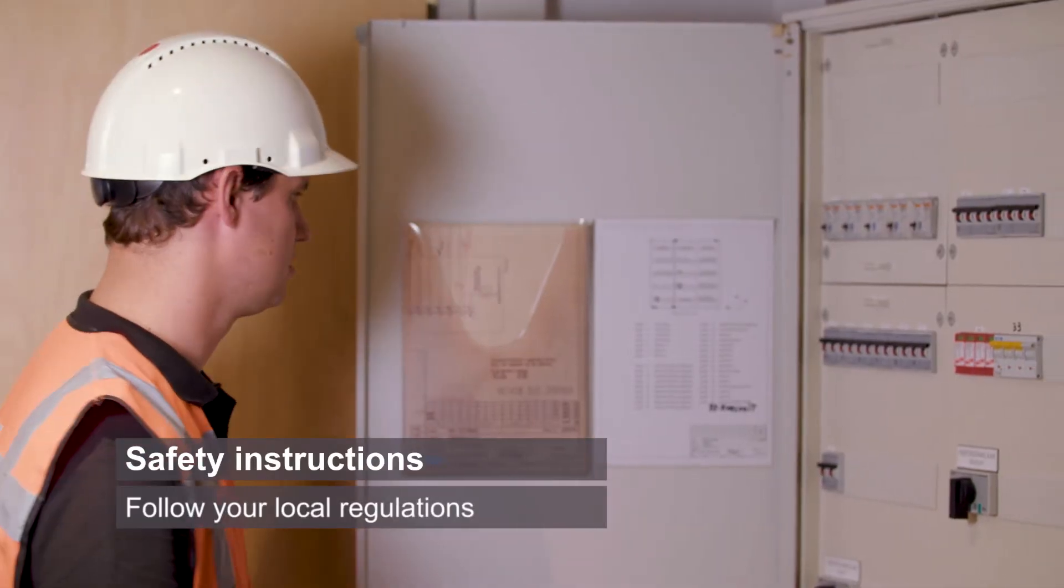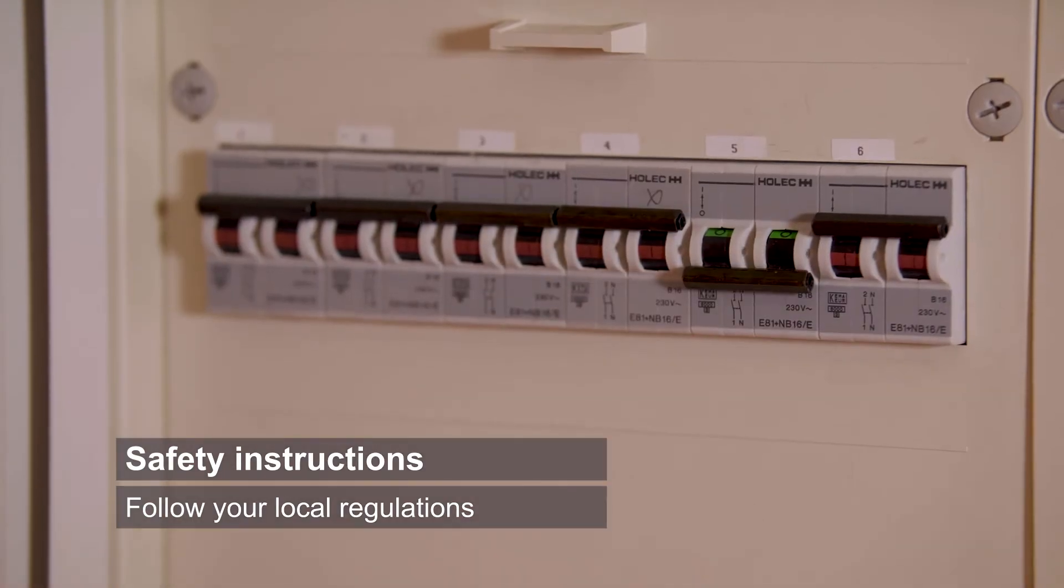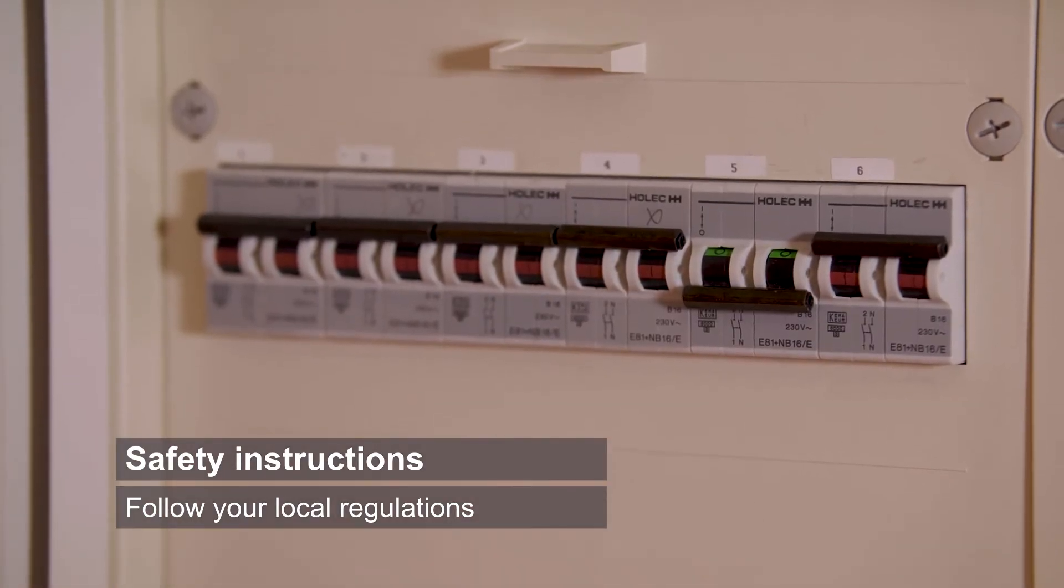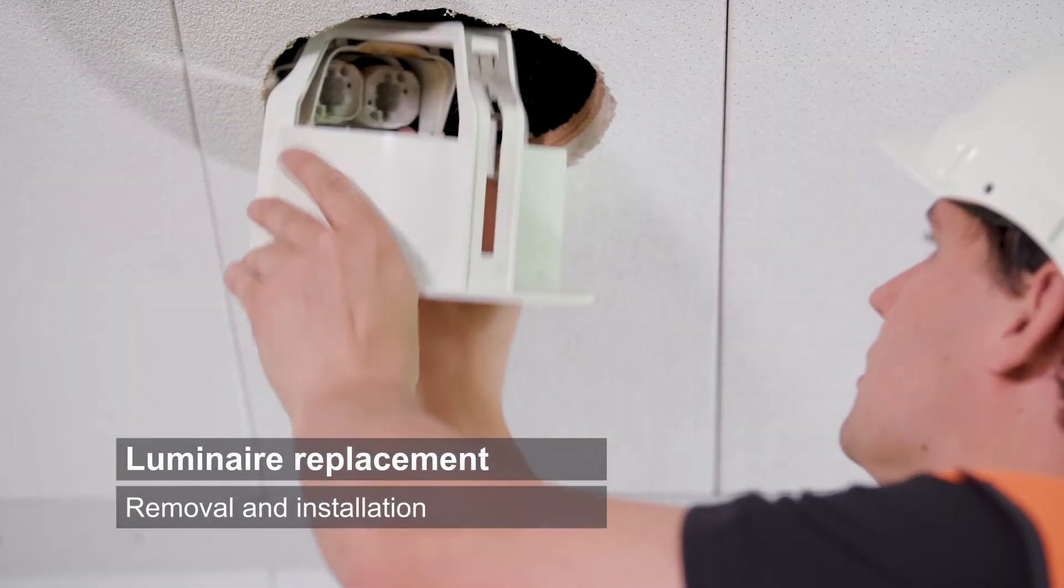Take care of your safety and follow your local regulations. Switch off the power in the main cabinet. Remove the existing downlight from the ceiling.